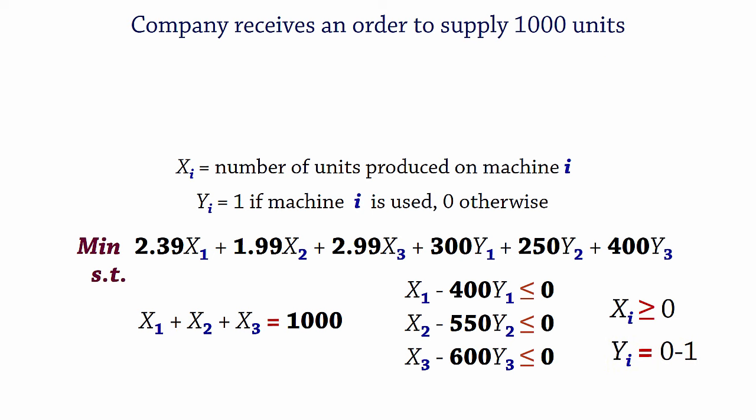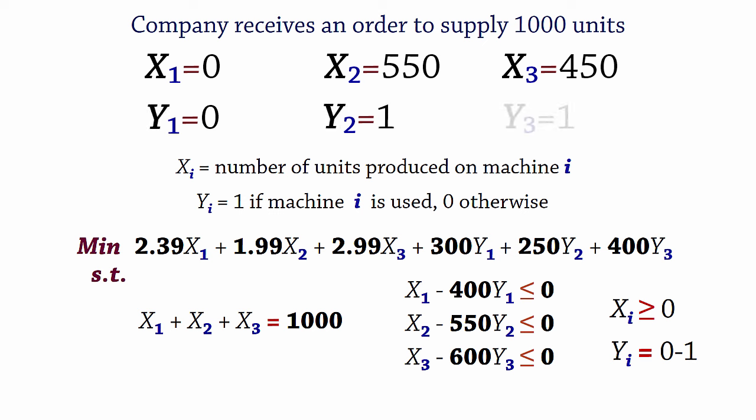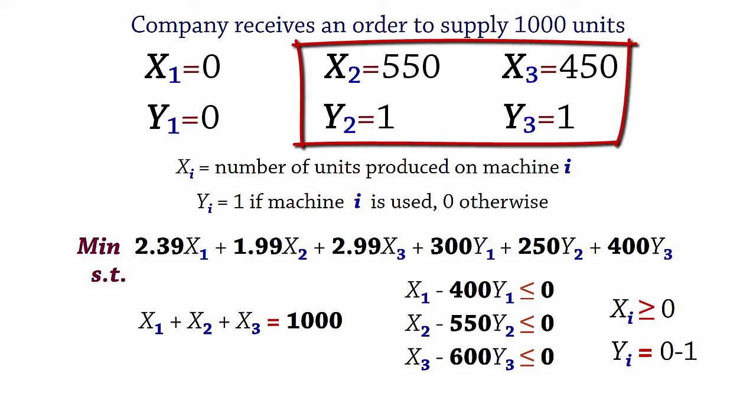On solving this model, we obtain x1 equals 0, x2 equals 550, x3 equals 450. And for the binary variables, y1 equals 0, y2 equals 1, and y3 equals 1. Showing that only machines 2 and 3 should be used. And that completes this fixed costs problem.